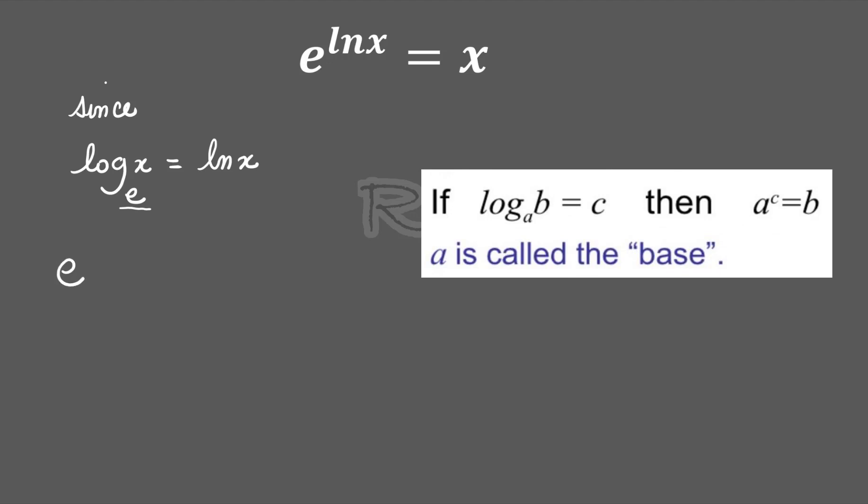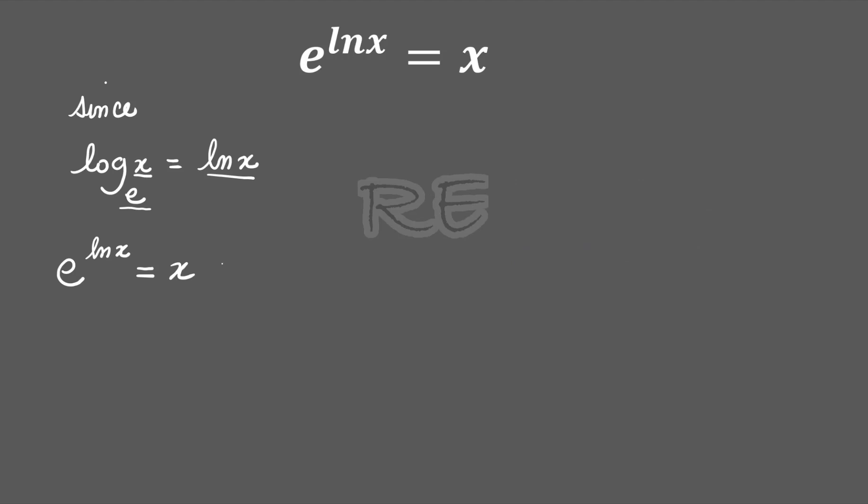So the base is e and logarithm is an exponent, therefore the exponent is ln x and the product is x. So e to the ln x is equal to x.